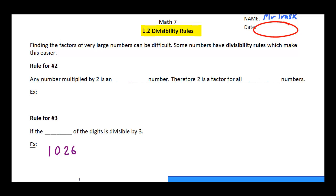First example here is the rule for number 2. Any number multiplied by 2 is an even number, and so therefore 2 must be a factor of all even numbers. It doesn't matter how large that number is. If it's even, then 2 is a factor.